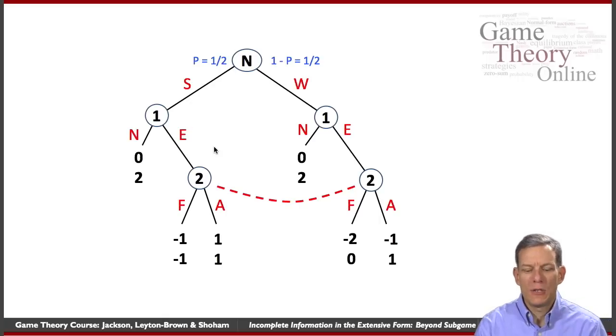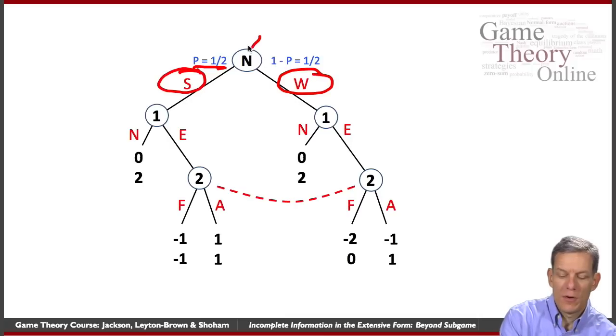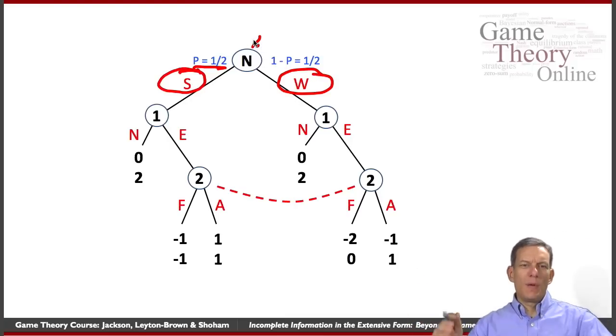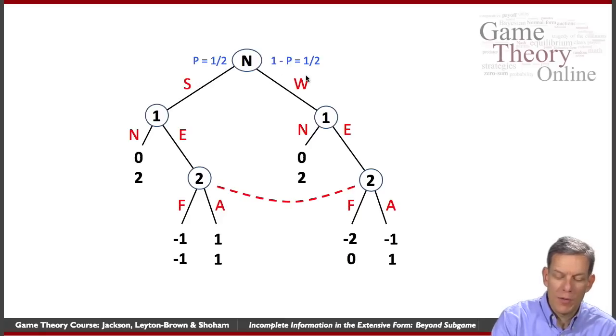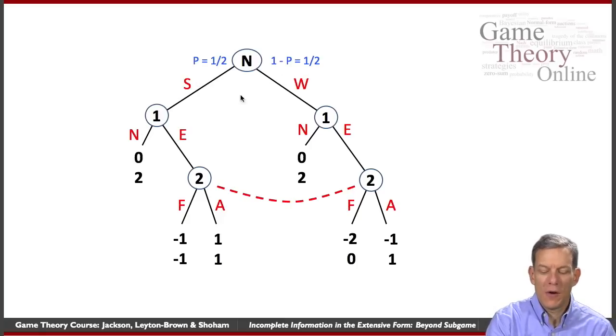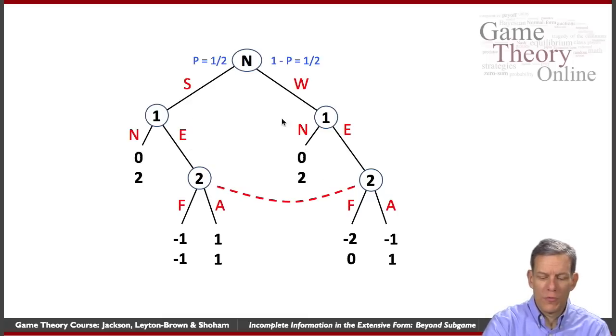And moreover, the incomplete information here is about the strength, how good player one is. So they could be a strong player, probability a half, or they could be a weak player. So the node up here is a move by nature. Nature moves first, randomly picks whether player one is strong or not. So with probability a half, they pick a strong player, with probability a half, they pick a weak player. And player one gets to see the outcome of that. So player one, this new coffee shop, I know whether I've got really good coffee or not. Player two doesn't know what the quality of firm one is when firm one enters. So if firm one is the strong one or firm one is the weak one, player two cannot distinguish between those two different situations, and that's why we have these information sets connected here. So that's the structure of the game.